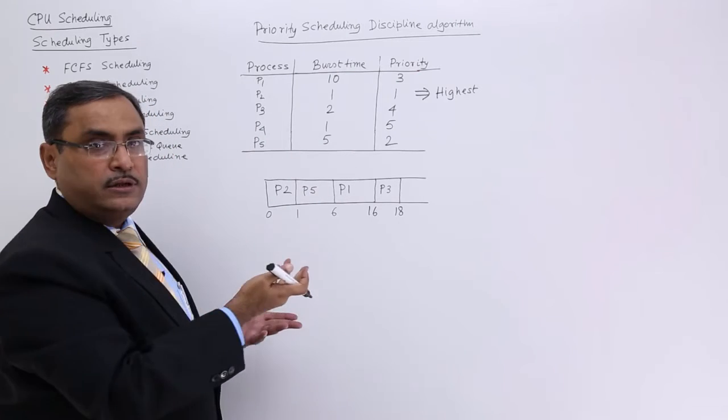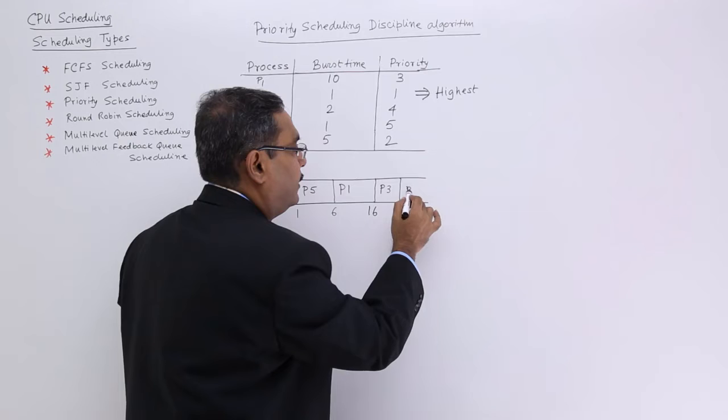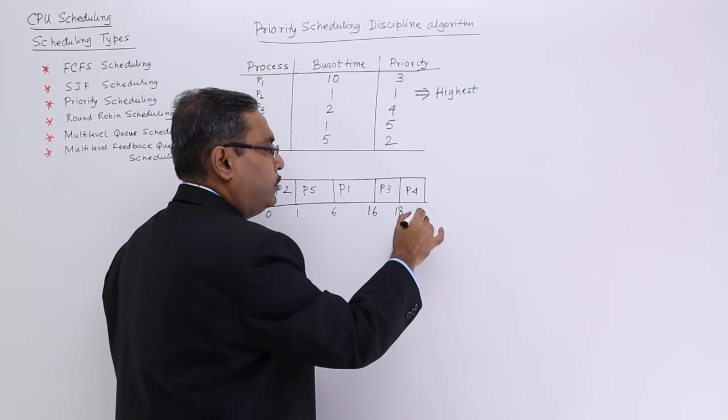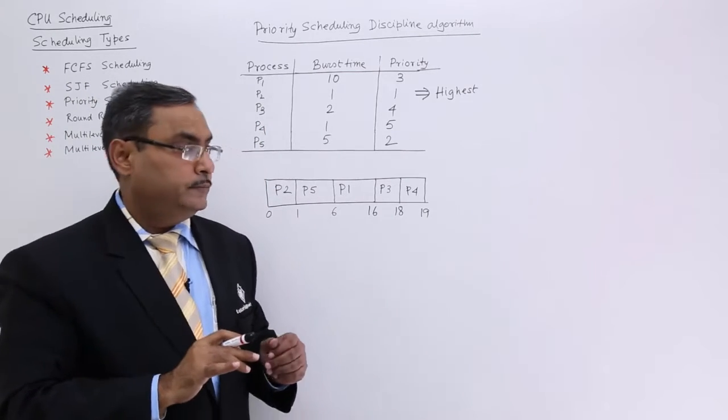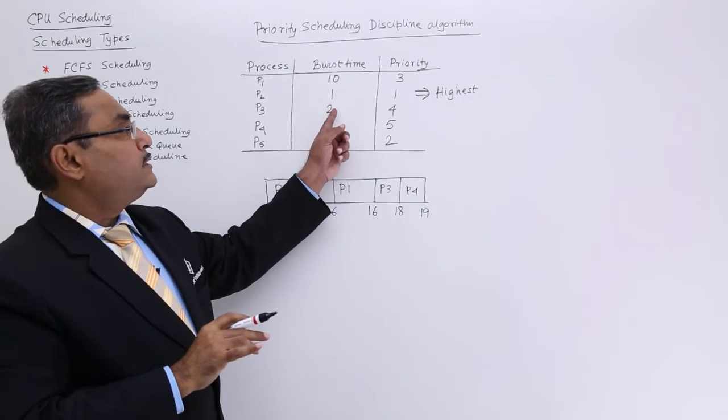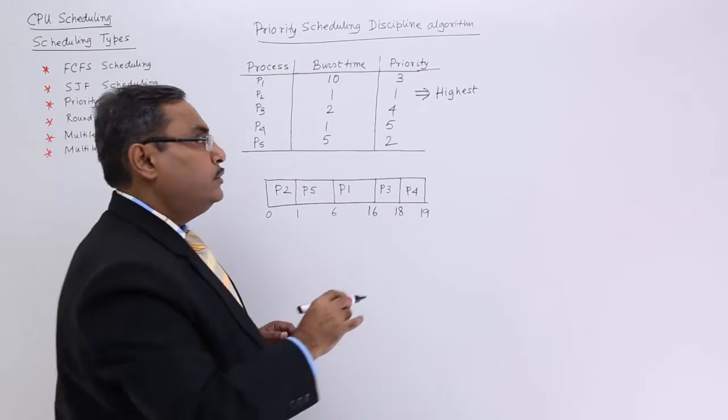Then, which will be coming next? Obviously, the only one process is remaining. So, that is P4 will be coming and it is having the burst time of 1. So, at the 19th instant of time, all the processes will get their completion. So, let me add this burst time 10 plus 3, 13 plus 6. So, 19. So, they are commensurating.